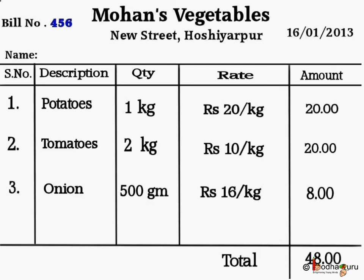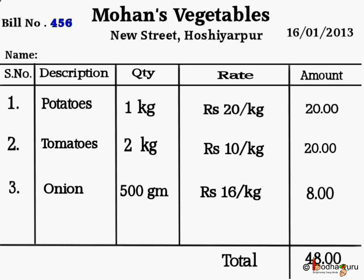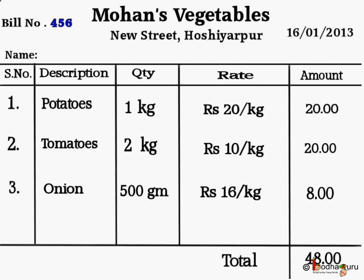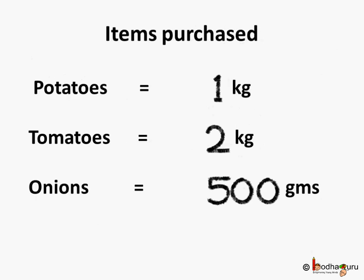How many things were bought by the lady? Three things: potatoes, tomatoes and onions. She bought 1 kg of potatoes, 2 kg of tomatoes, and 500 gms or half kg of onions.